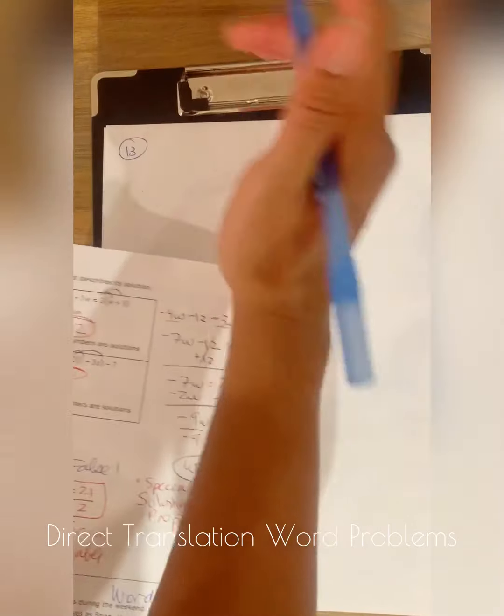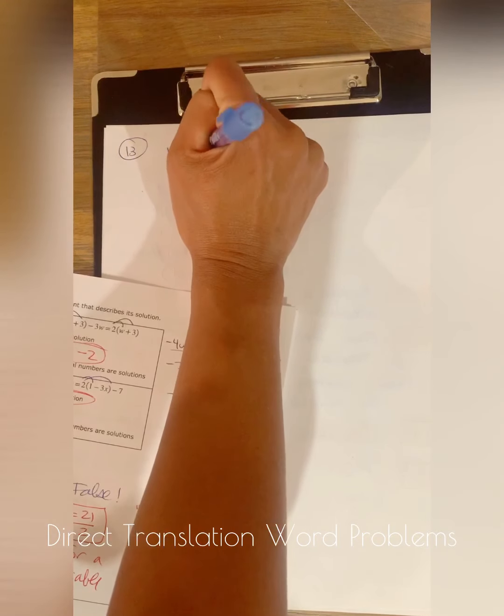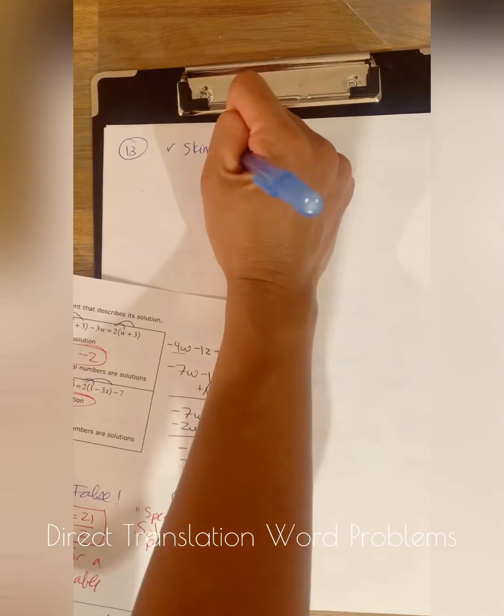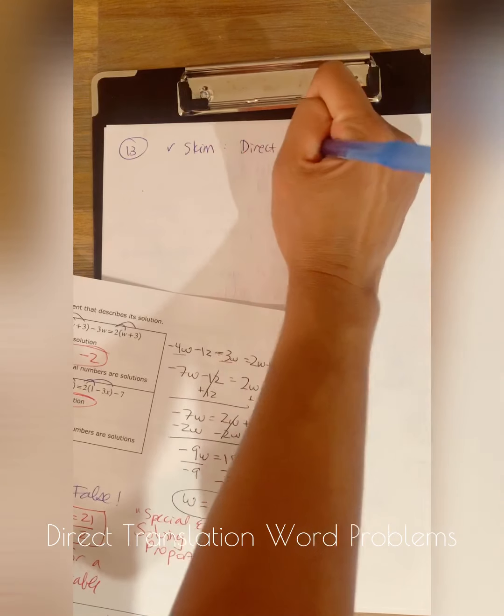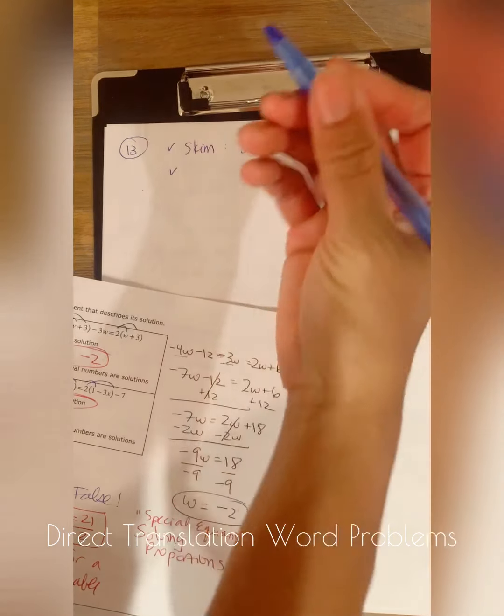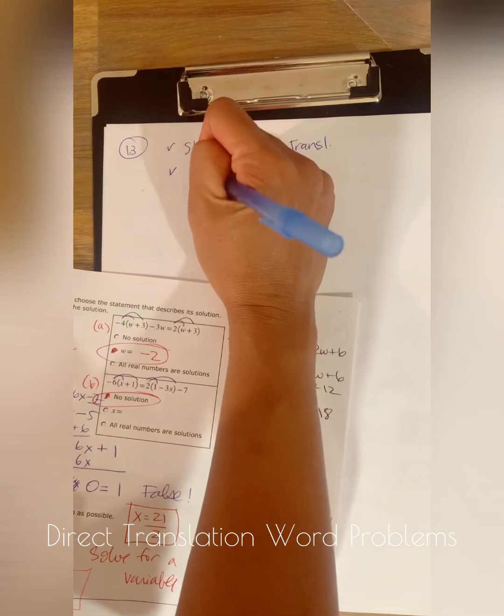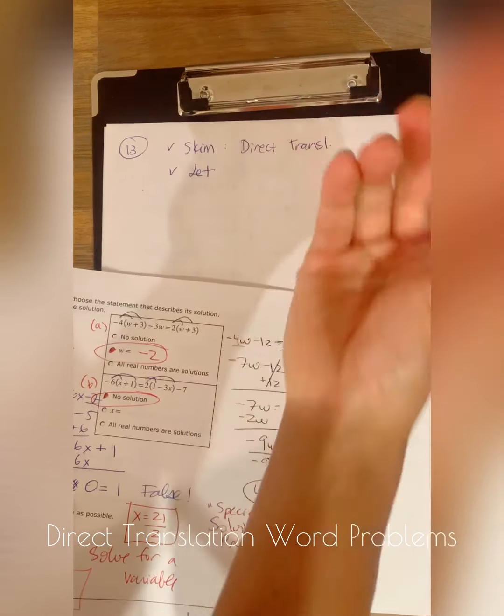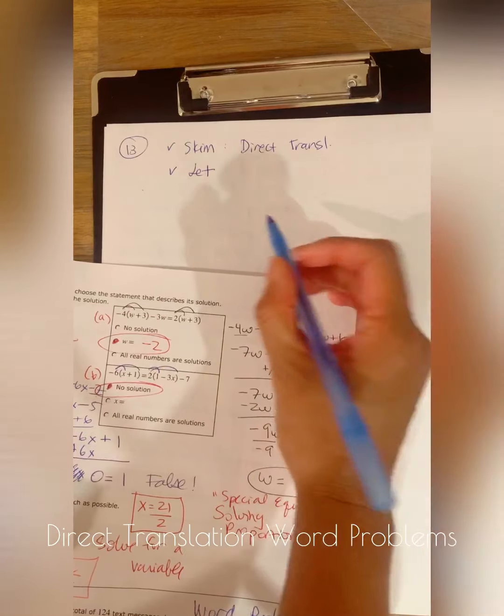So in number 13, I've already skimmed the problem and I determined that this is a direct translation problem. The next step is I'm going to assign a variable to the unknown value or an unknown part of the problem.